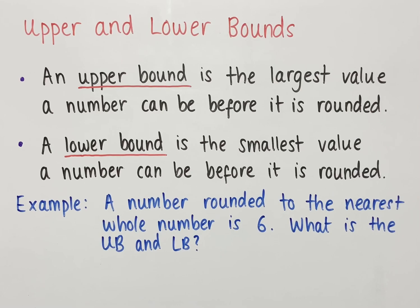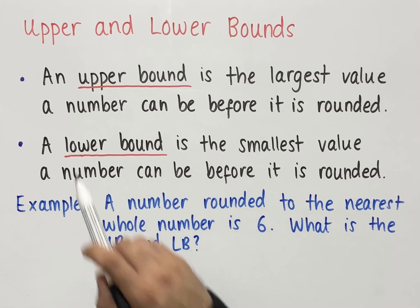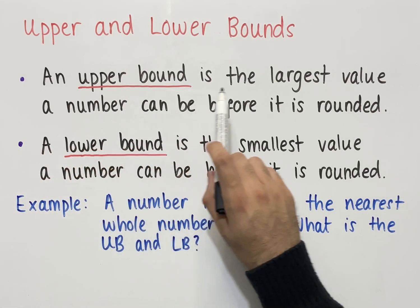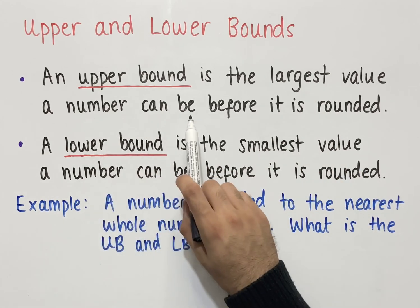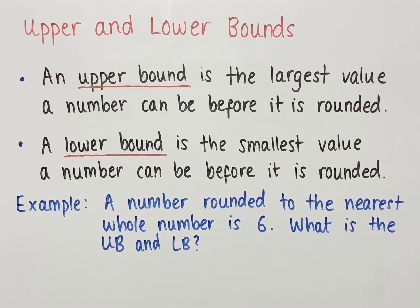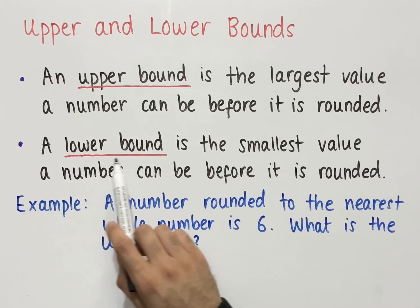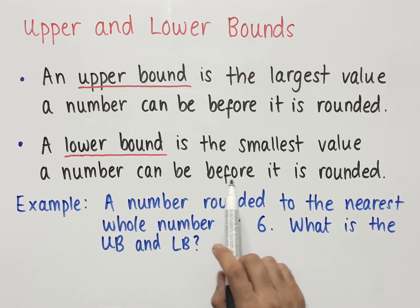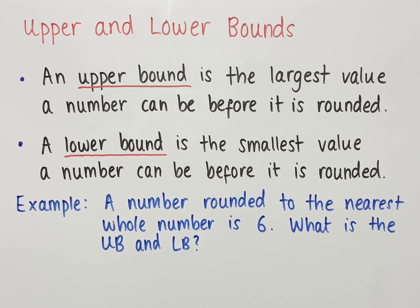Let's look at upper and lower bounds. An upper bound is the largest value a number can be before it is rounded. A lower bound is the smallest value a number can be before it is rounded. This relates to when we're rounding decimals and whole numbers — we can find the upper and lower bounds of the numbers that we round.